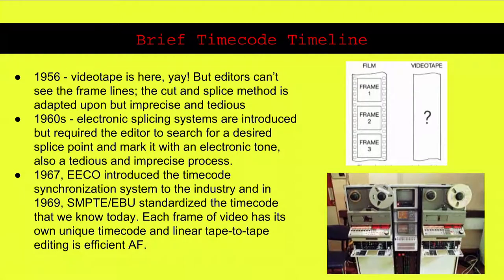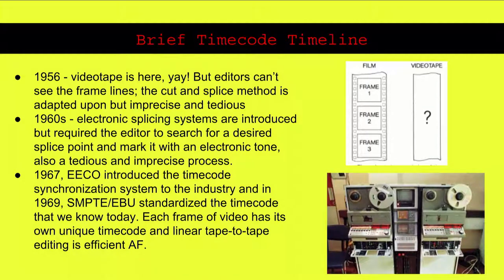A little bit about the history of time code. When analog tape was rolled out in 1956, it was apparent from the start that editors would have to ditch the old cut and splice method used for film. Electronic splicing systems were introduced but were tedious and imprecise. In 1967, the Electronic Engineering Company of California introduced the time code synchronization system to the market, and in 1969, SMPTE standardized the time code we know today. Each frame of video now has its own unique time code in the 24-hour format, and linear tape-to-tape editing became efficient.